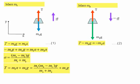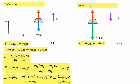Substituting that back into equation one gives us an expression for the tension in the string, shown on screen as m1 times (m2 minus m1)g divided by (m1 plus m2), plus m1g. Transposing that equation further gives us, finally, 2m1m2g divided by (m1 plus m2).